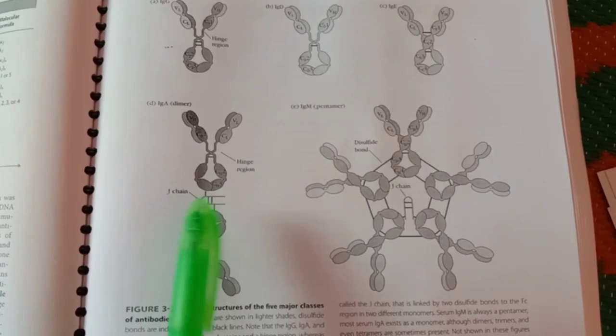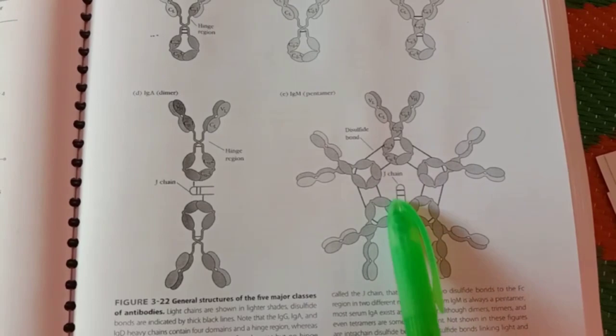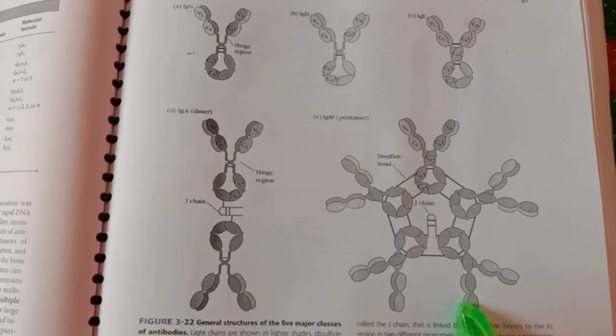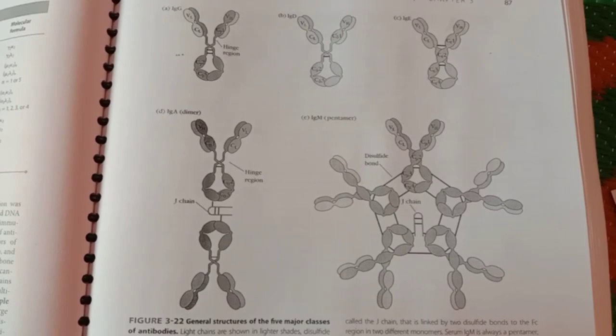IgM is there. This is pentameric. The disulfide bonds are there and J chain which joins the antibody. This is page number 87 of Kuby, the new edition. You can see and this is your homework, just to study about these things. Thank you so much for your patient listening. We'll meet in the next video. Thank you.